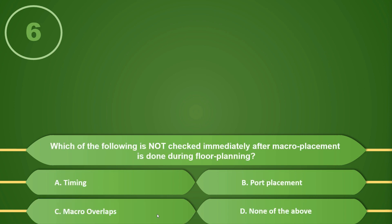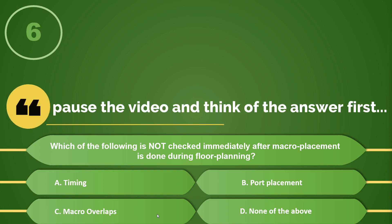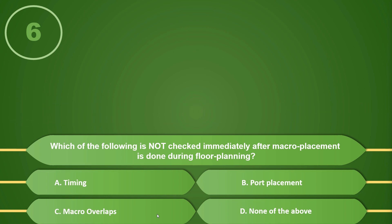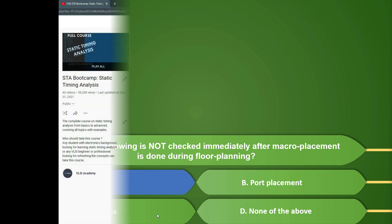Which of the following is not checked immediately after macro placement is done during the floor planning stage? Options: A) Timing, B) Port placement, C) Macro overlaps, or D) None of the above. If your answer is A, timing, then you are correct.